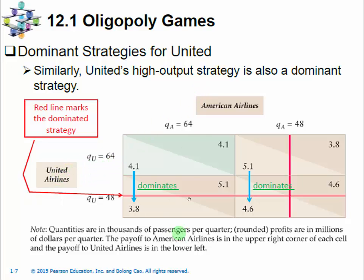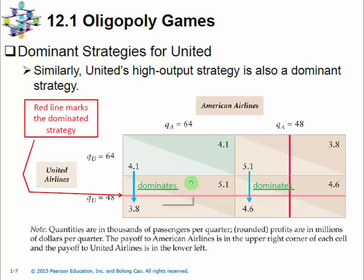United compares: when American Airlines is choosing high output, 4.1 is better than 3.8. If American Airlines is choosing the low output, 5.1 is better than 4.6. The high output strategy is always providing a higher payoff. So it is again the dominant strategy for United, because it is a strategy that produces a higher payoff than any other strategy the player can use, no matter what American Airlines — its opponent — does. United will always play this dominant strategy, producing at a high output level, and will never play the dominated strategy — the low output level — in this particular game.